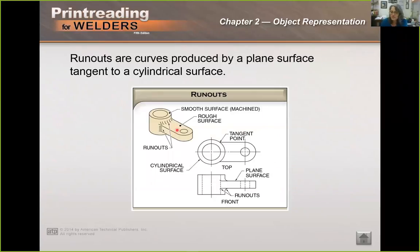Runouts are curves produced by a plain surface tangent to a cylindrical surface. So for example, this piece here. These rounded bits here are runouts. You've got this flat piece attached. These are called runouts. They're not fillets because they're on a cylindrical surface. They're runouts when they come from a cylindrical surface.